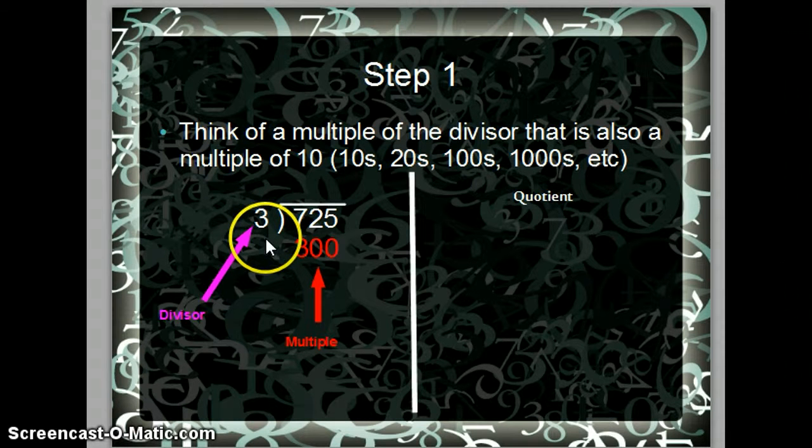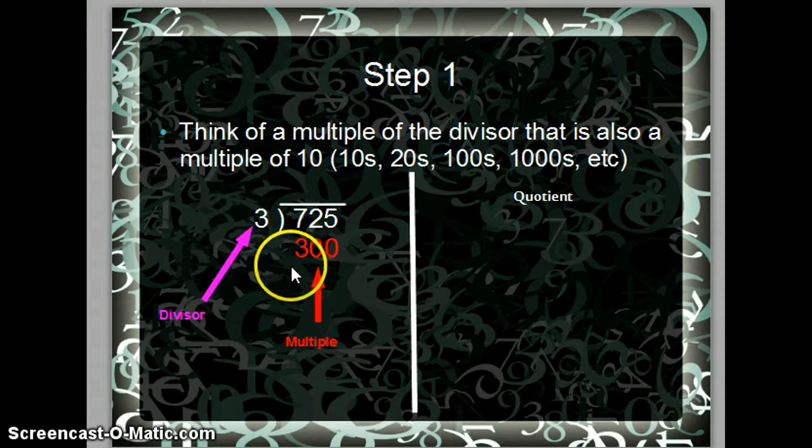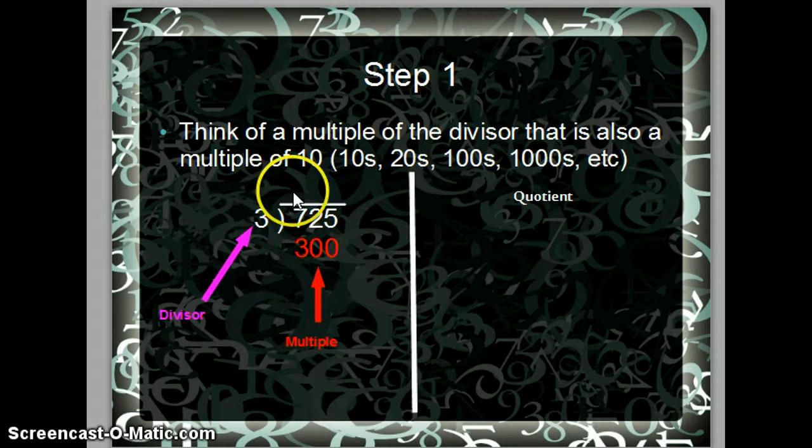Here the divisor is three. So a multiple of this divisor that is also a multiple of 10 is 300. You want to get a multiple that is very close to the dividend, which is 725.